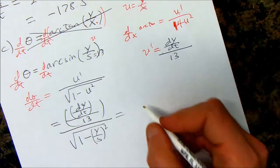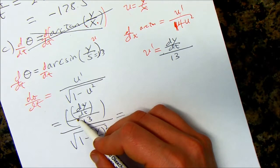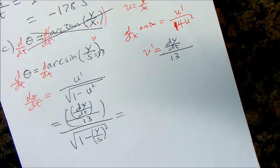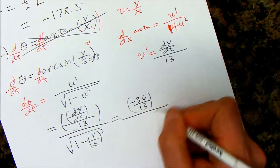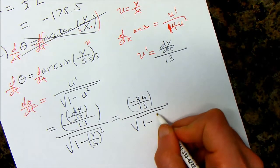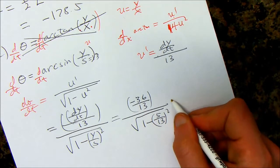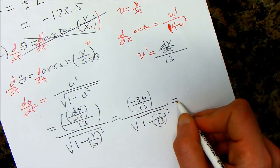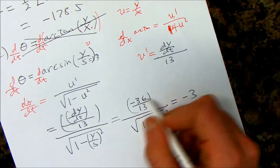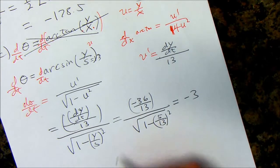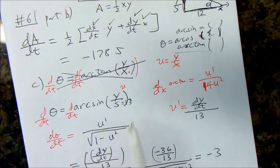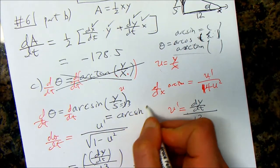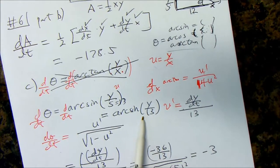So, now plug everything in. It looks a lot worse than it is. dy/dt turned out to be negative 36. So, this is negative 36 over 13 over the square root of 1 minus y, which is 5 over 13 squared. So this all ends up being, if you simplify it, negative 3. You can do the plugging in and figuring out.